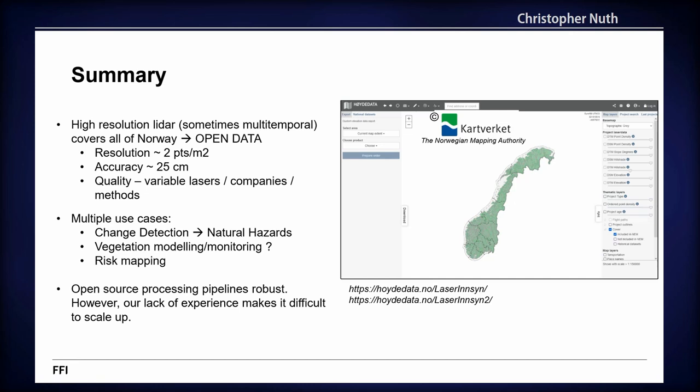To summarize: high-resolution LiDAR data is available over the entire country of Norway. It's open — download it, use it. Some of it's classified, some not so well. The quality is variable — early data is very low quality, but later data can have up to 25 points per square meter, so you can find some treasures. Multiple use cases include change detection, vegetation modeling and monitoring, and risk mapping. The open-source processing tools are amazing. The main challenge is scaling — how can we process all this data in a consistent way? If anybody has suggestions, let me know. Thank you.